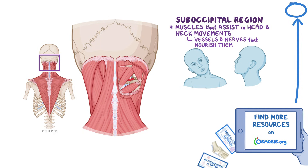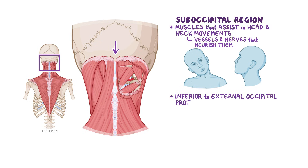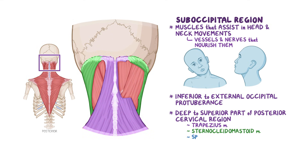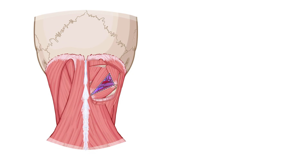The suboccipital region is actually a pyramid-shaped muscle compartment located inferior to the external occipital protuberance and deep to the superior part of the posterior cervical region, underlying the trapezius, sternocleidomastoid, splenius, and semispinalis capitis muscles. This region has four small paired muscles, of which three of them form the boundaries of an area known as the suboccipital triangle.